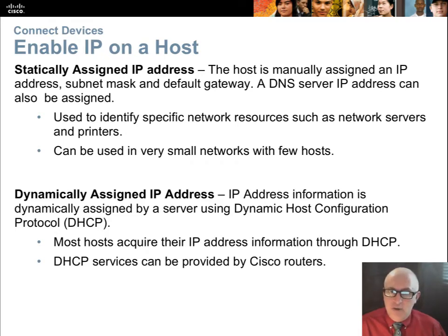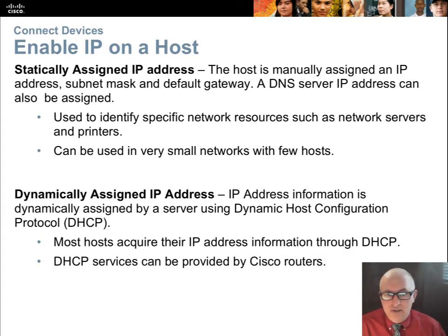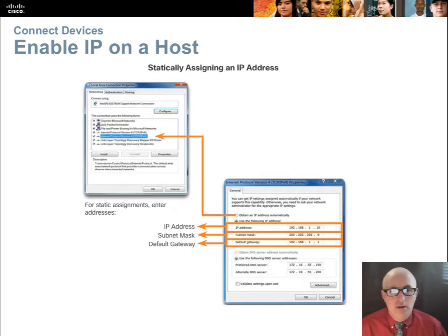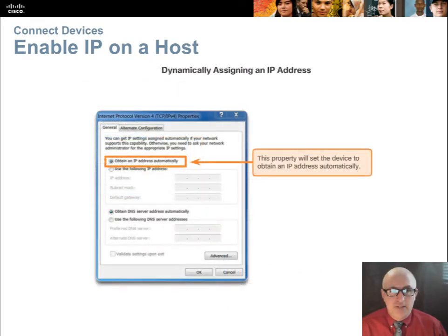The preferred way to put IP information on your devices is using DHCP, or dynamically. In that case, you set up a DHCP server — which could be set up on a Cisco router, and we'll be doing that in this class. Your hosts, when they power on, simply request their information over the network, and the router provides all the network settings they need from a pool of settings. You'll have labs where you get to set up both methods.